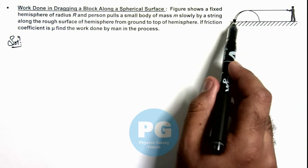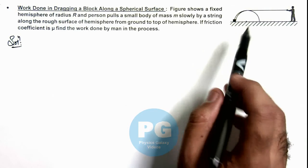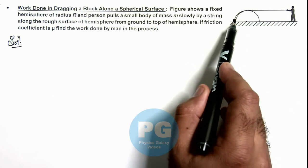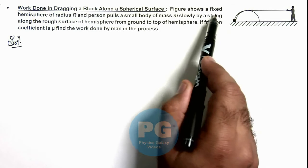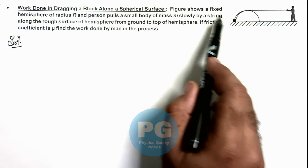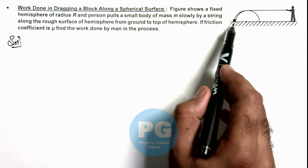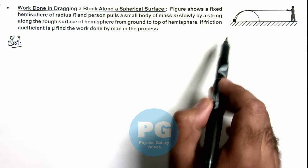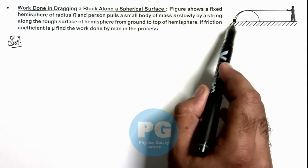One force acting on the block is due to gravity, and other force acting on the block is friction and one is normal reaction. As normal reaction is normal to the motion of this block or along the path of this block, it won't do any work.